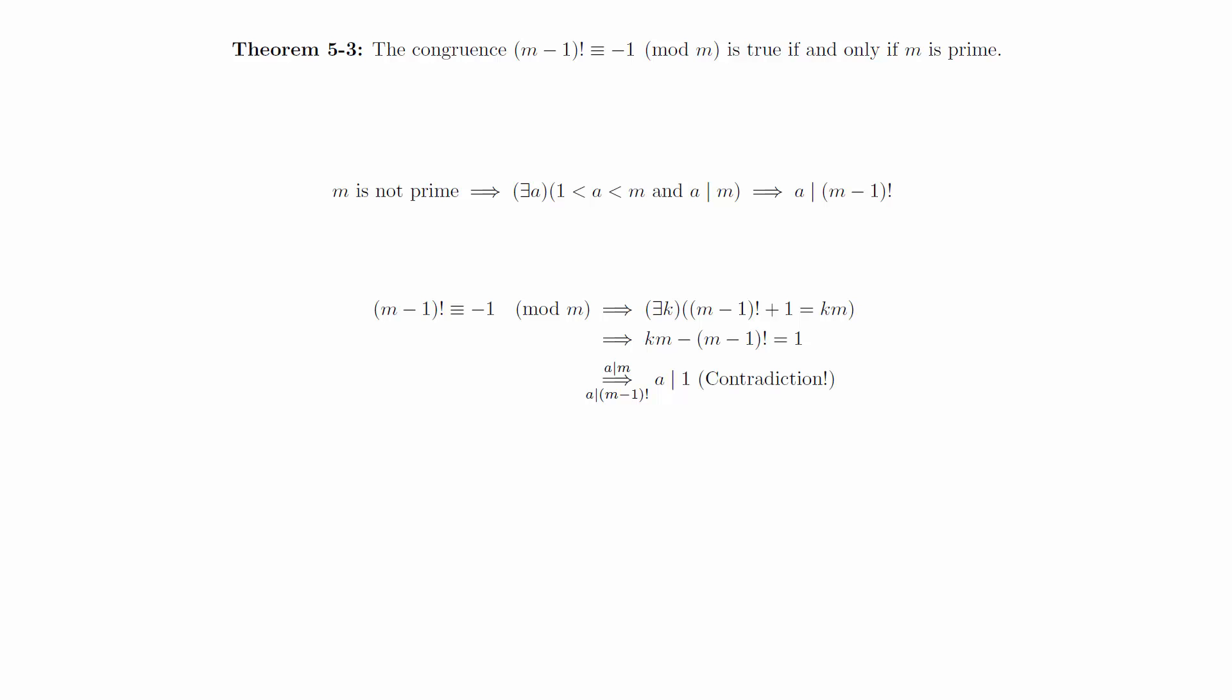This gives a contradiction and completes the proof that m minus 1 factorial is congruent to negative 1 mod m if and only if m is prime.